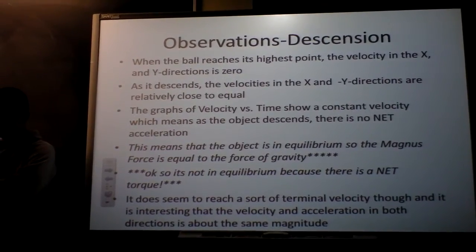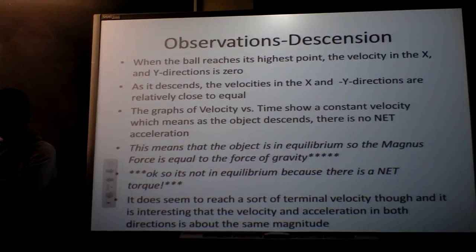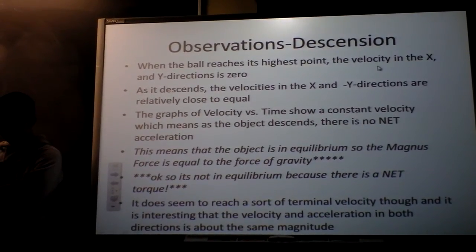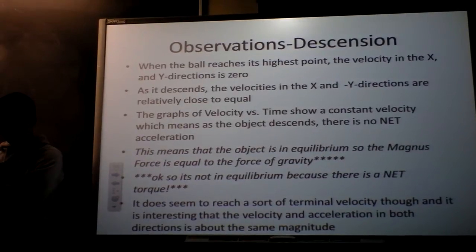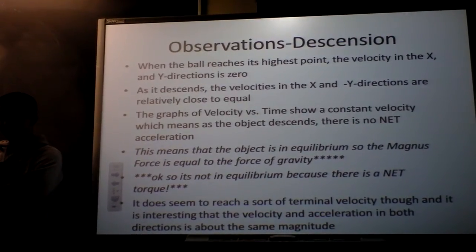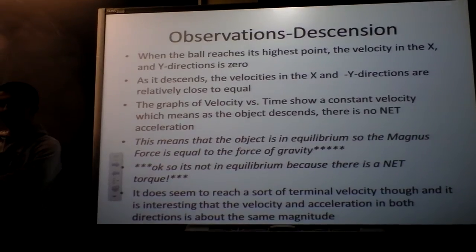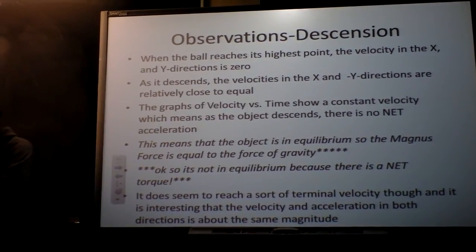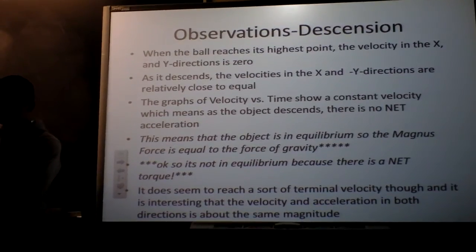I'll go back here so like you start with a positive acceleration in the Y direction and then here you actually go back and see. Right about there. So that's what we observed during the ascension part as it reaches its max height and then as it descends. At the highest point it's zero and the velocities in the X and Y direction like we said are pretty much equal, they're close to equal.